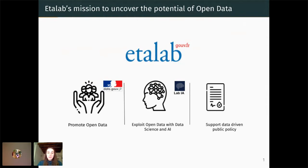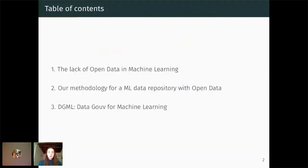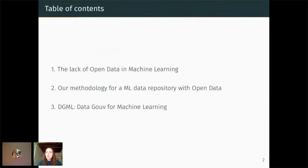I will be mainly focusing on this today, talking about how to exploit open data with machine learning. First, we will quickly see how there is an actual lack of open data in machine learning. We'll try to understand why this is the case and why we should actually be using it more. And to tackle this, we created DGMML, which is a data repository for machine learning using open data from data.gouv.fr, and I will show you the methodology we used to create this platform.